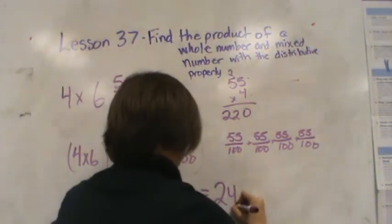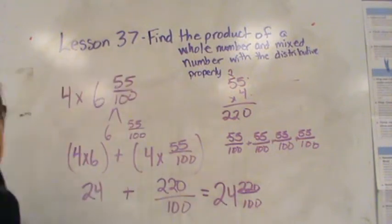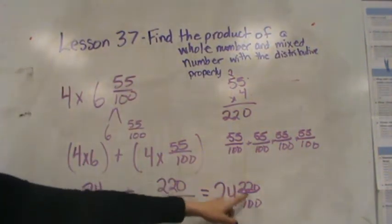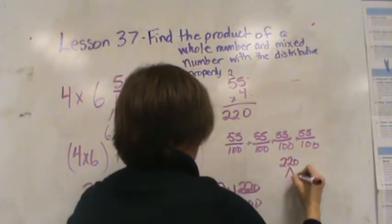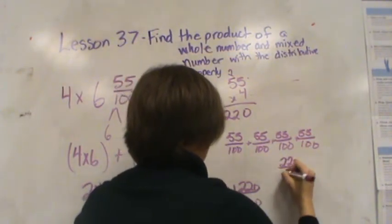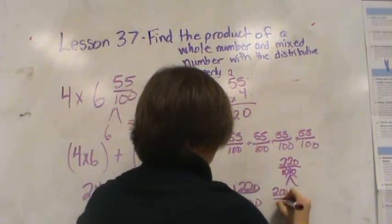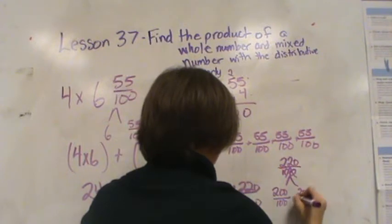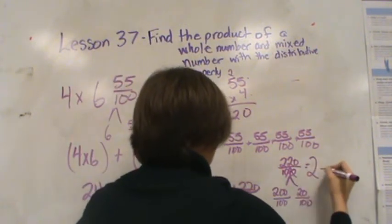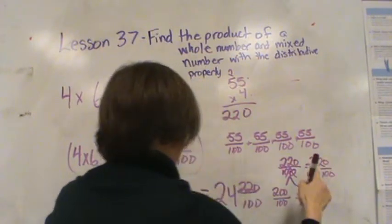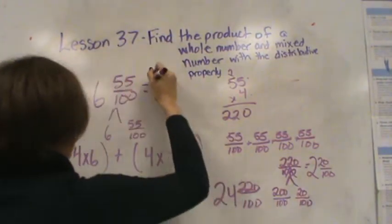So now I need to put these together. I have 24 and 220 hundredths. But just like the last problem, 220 is bigger than 100. So I need to decompose it. 220 hundredths decomposes into 200 hundredths and 20 hundredths. 200 hundredths is the same as saying 2 and 20 hundredths. Add that to 24. So 24 plus 2 is 26.